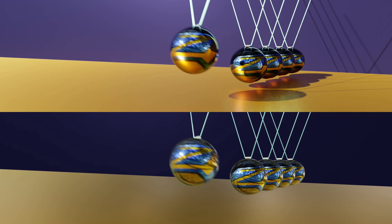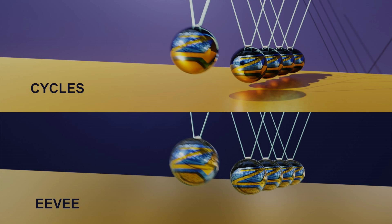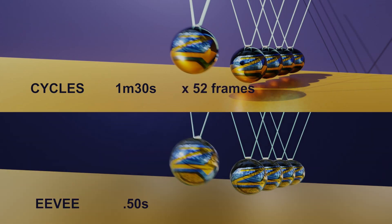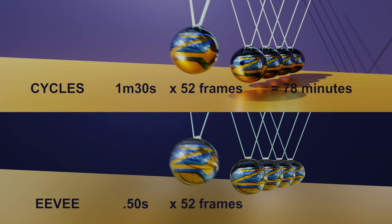Here we have two images rendered in Blender — one through Cycles and one through EEVEE. You can see the difference in quality: Cycles has a lot more richness, superior lighting and shading. The difference is this: to render the Cycles image took one minute and 30 seconds, whereas in EEVEE it took half a second. For a simple animation of just over three seconds — 52 frames — rendering the entire sequence in Cycles would have taken 78 minutes, as opposed to EEVEE where the total process would be 26 seconds. If your computer can handle Cycles, go for it; otherwise EEVEE is the best option in terms of speed and time.